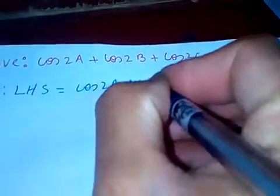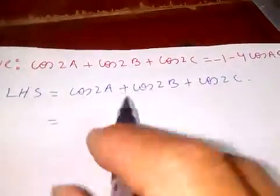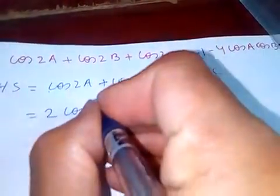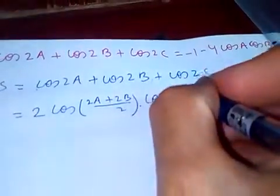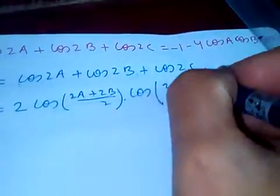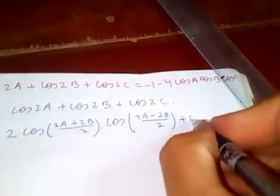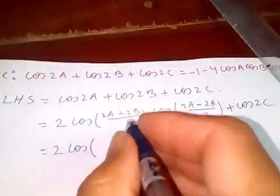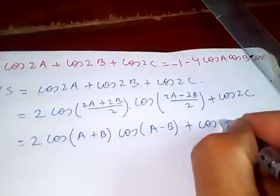From the left hand side: cos2A + cos2B + cos2C. Let's apply the formula cos A + cos B = 2·cos((A+B)/2)·cos((A-B)/2). So we get 2·cos((A+B)/2)·cos((A-B)/2) plus cos2C.